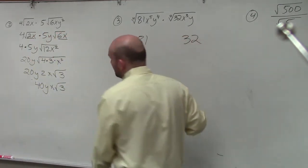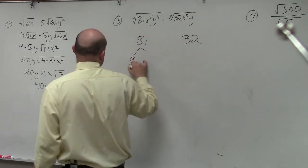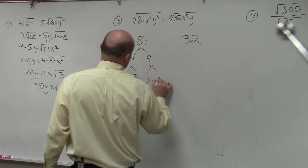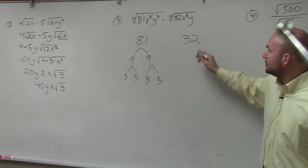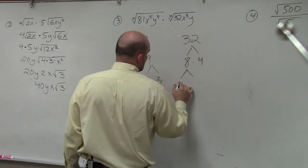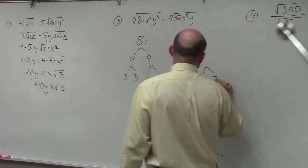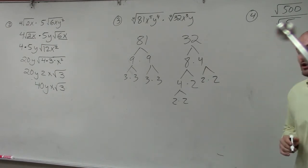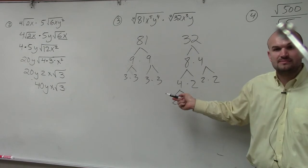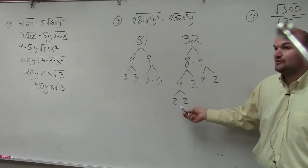So 81, I can break up into 9 times 9, 3 times 3, and 3 times 3. And 32, I can break up into 8 times 4, 4 times 2, 2 times 2, and 2 times 2. So what I notice is the factorization of 81 is really 3 multiplied by itself 4 times, and the factorization of 32 is 2 multiplied by itself 5 times.